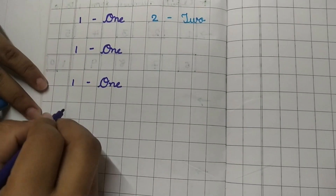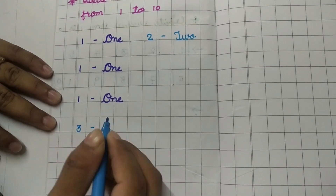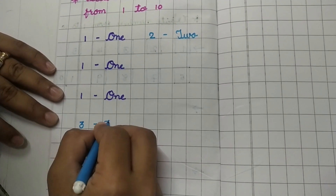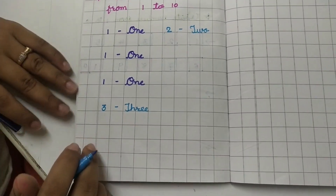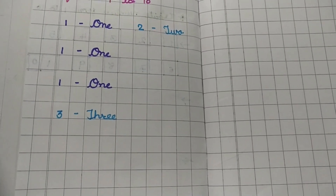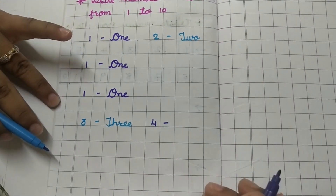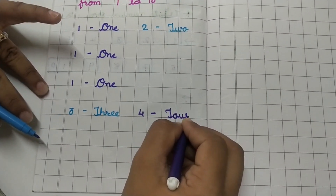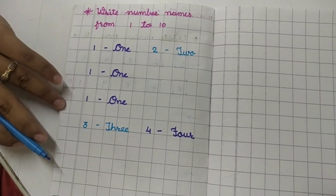Now number 3. After 2, write 3. What is the number name of 3? THREE — 3. Write 3 times. After 3, number 4. What is the spelling of 4? FOUR — 4. This way. You have to write 3 times.